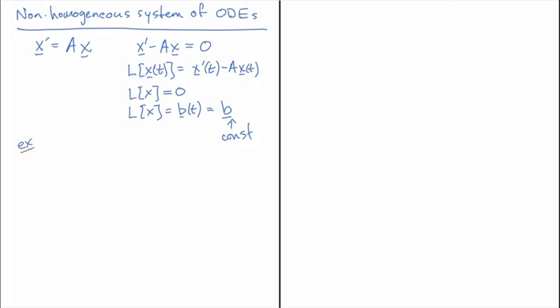Okay so let's do an example. So we have X prime is equal to the matrix 1, 2, 1, 1 times X and I'm going to add to that an inhomogeneous term 2, 3.